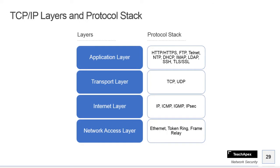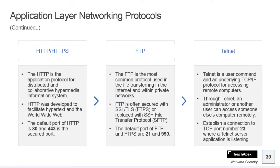So these are the protocols we are going to discuss so that you can understand how they work, what they do, and why they are implemented on these particular layers. Let's begin with our first protocol — HTTP and HTTPS — which work on the Application layer. We are going to discuss Application layer networking protocols, starting with HTTP and HTTPS. You may have noticed in the address bar of your browser you get either HTTP or HTTPS while browsing.